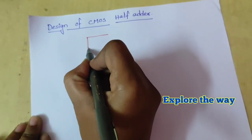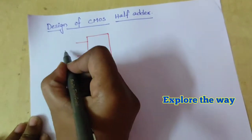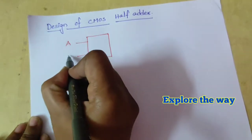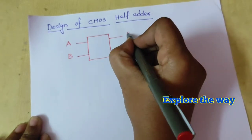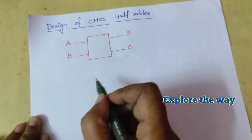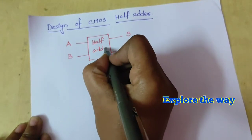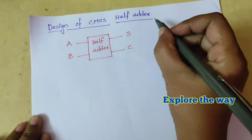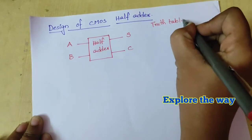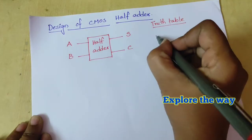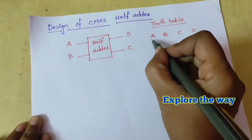This is a half adder. It has 2 inputs, A and B, and it produces 2 outputs: sum output and carry output. The inputs are A and B, and the outputs are carry and sum.